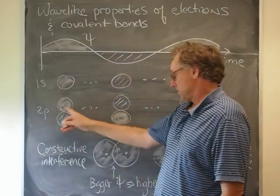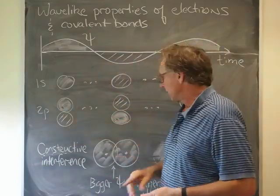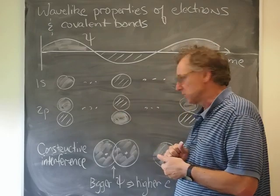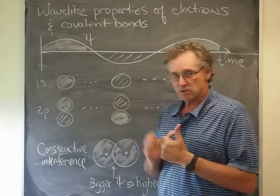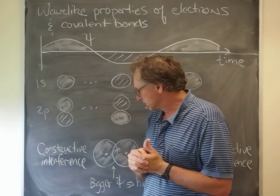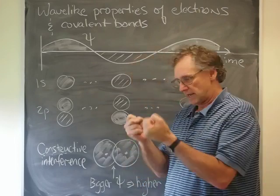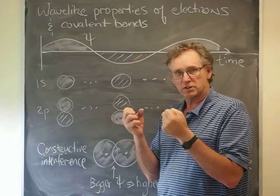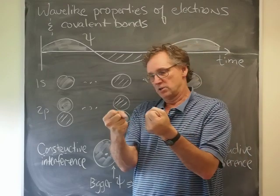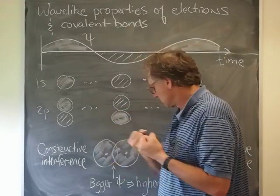So just like with any other wave, those phases change over time. So given all that, the question then arises: what happens when an s orbital from one hydrogen atom, let's say, interferes with the s orbital from another hydrogen atom.